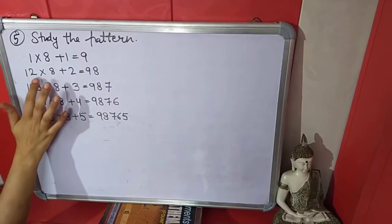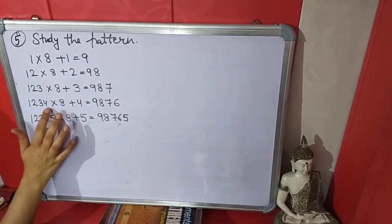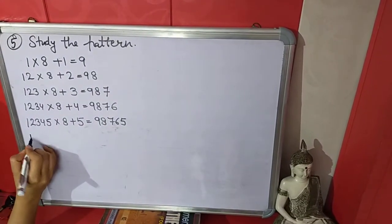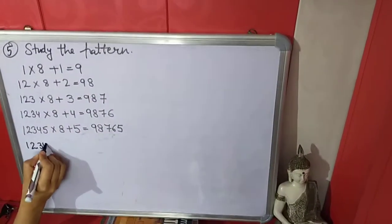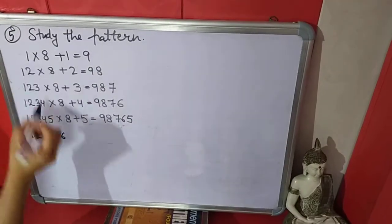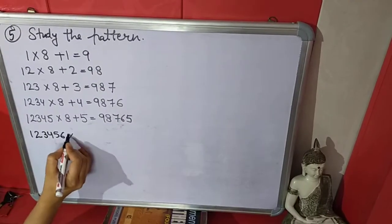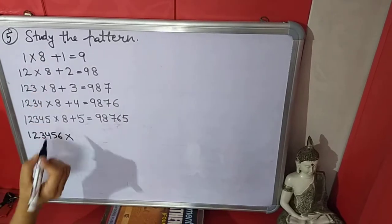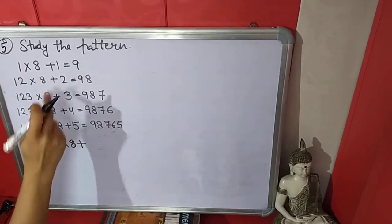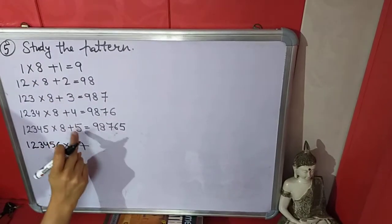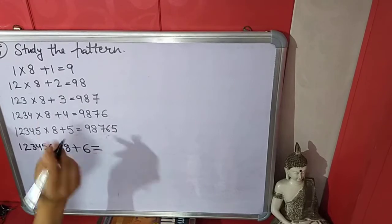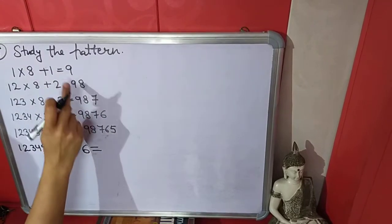So the next step in the forward counting part will be 1, 2, 3, 4, 5, 6. Now multiply. The 8 is the same here, so we will write 8 as it is, plus the sequence 1 through 5. The next number gives us 6, and the result on the right side follows a backward pattern: 9, 8; then 9, 8, 7; then 9, 8, 7, 6; then 9, 8, 7, 6, 5.